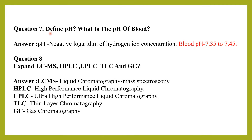Coming to the next commonly asked question: define pH. pH is the negative logarithm of hydrogen ion concentration. Another simple question is: what is the pH of blood? The pH of blood ranges from 7.35 to 7.45.